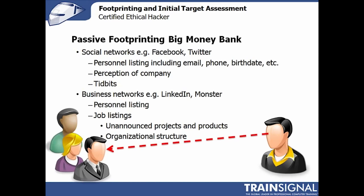Continuing passive footprinting, we want to look at who's working at Big Money Bank. The easiest way is to go on Facebook, Twitter, LinkedIn, Monster, and similar platforms, searching for employees and relatives of employees. Looking around on Facebook you can find employees and get rich information — where they live in general, phone numbers, email addresses, birthdays, and what they think of the company. This plays into both technical attacks and social engineering attacks later.